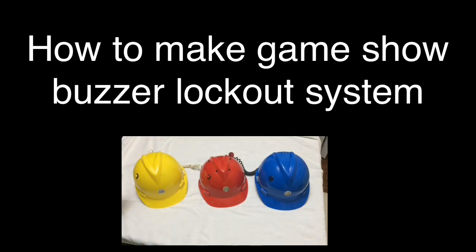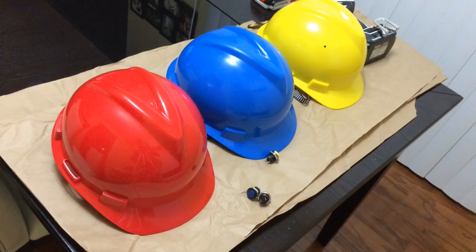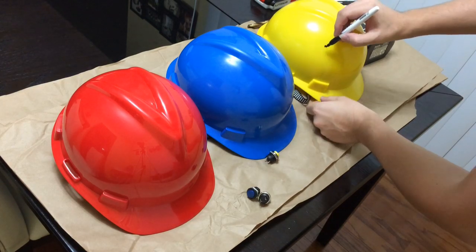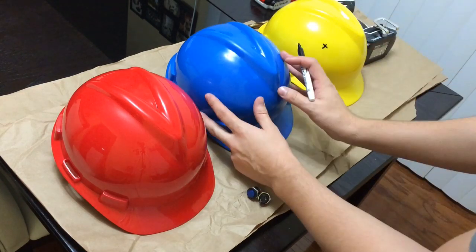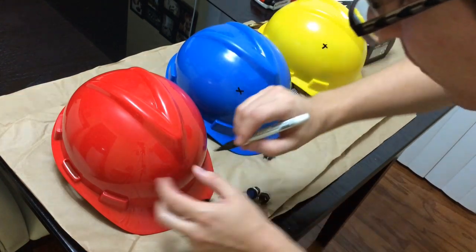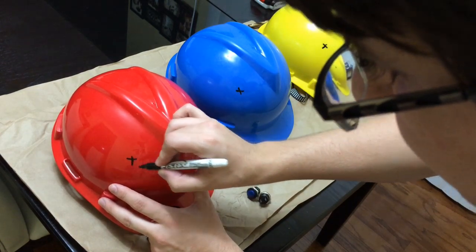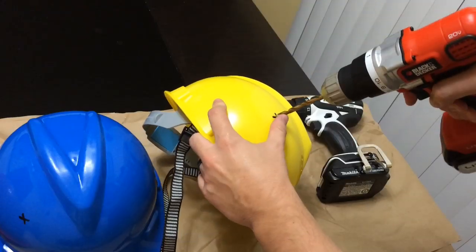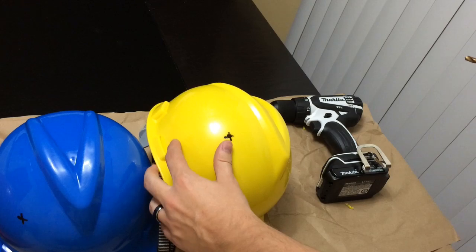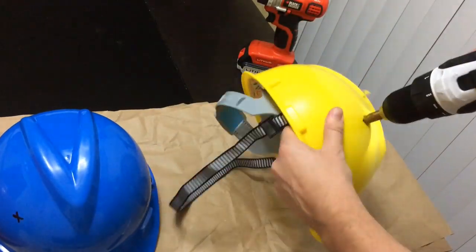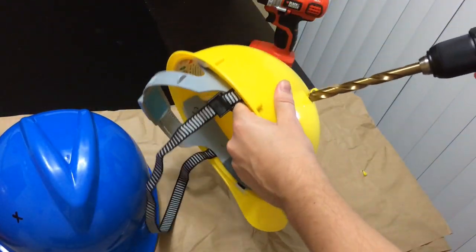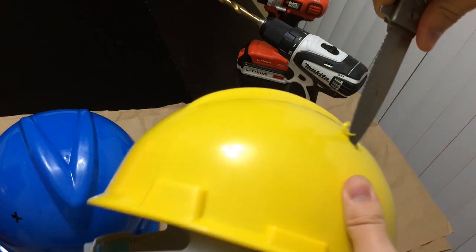How to make a game show buzzer lockout system. So first, what I did was I marked the holes where I'm going to put my switch. Then what I did was I used a quarter-inch drill bit and a half-inch drill bit to make a hole, and then cleaned it up with a knife.